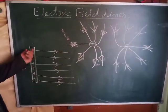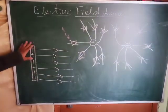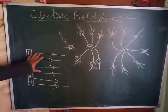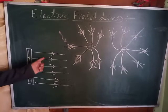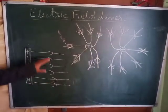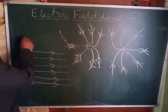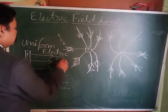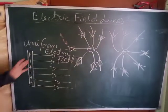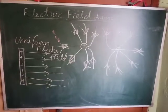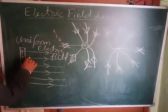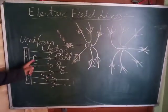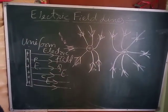Next, suppose we have a charged body on which positive charge is distributed uniformly. You will get electric field lines like this — parallel electric field lines with equal spacing between them. When the electric field lines are parallel to each other and equally spaced, they produce a uniform electric field. Uniform electric field means the electric field intensity at point P is the same as at point Q — the electric field intensity is the same at all points in that region.